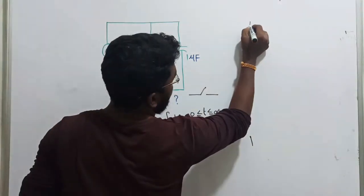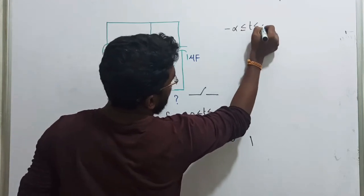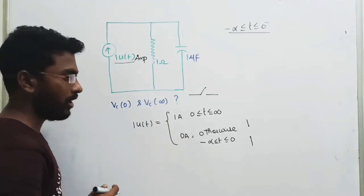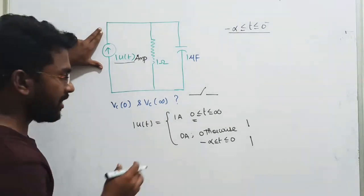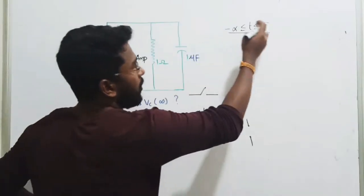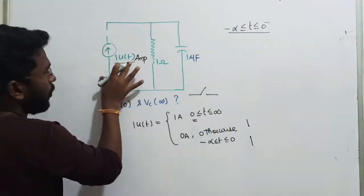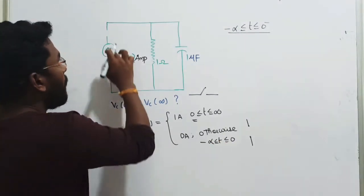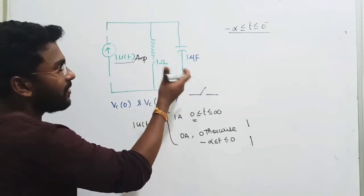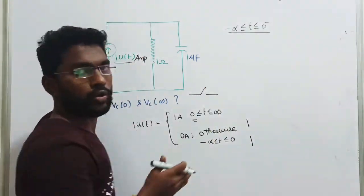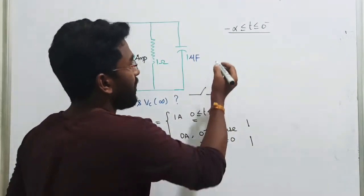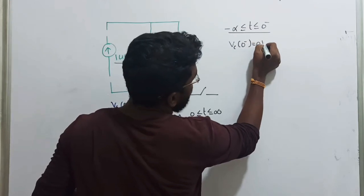At t equal to zero, the current will start appearing into the circuit. Let me break the circuit into two parts — from minus infinity to zero minus, that is before the operation of the switch. At t equal to zero, here we have a hidden switch. From minus infinity to zero, the current source value is simply open circuit. If you open circuit your capacitor for a long time, it does not connect with any DC supply. So the initial voltage drop across the capacitor is going to be zero.